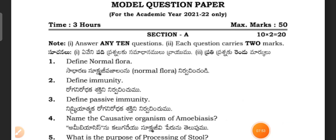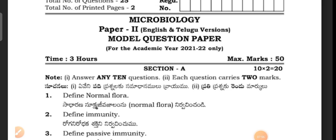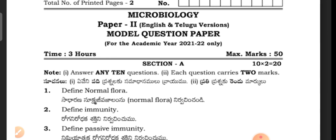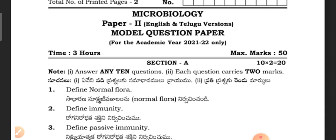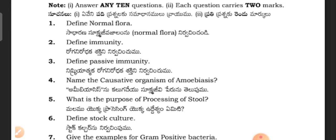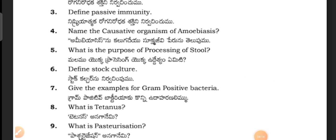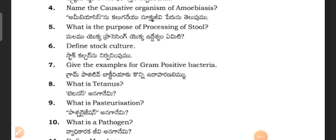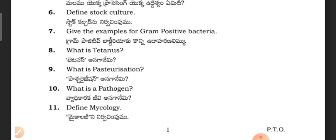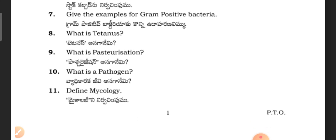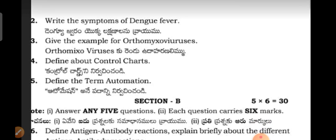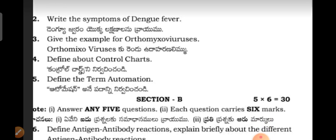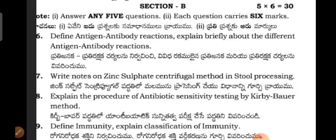Now, a model question paper from Telangana State raised recently for the academic year 2021-2022. Short questions include: different normal flora, different immunity, different passive immunity, name the causative organisms for amoebiasis, what is the purpose of processing of stool, different stock culture, examples of gram-positive bacteria, what is tetanus, what is sporulation, what is pathogen, different mycology, symptoms of dengue fever, examples of arboviruses, different control charts, and the term automation.